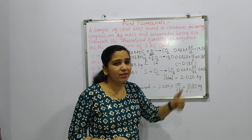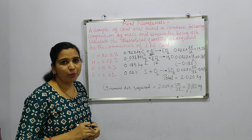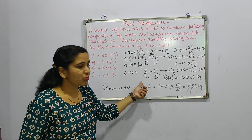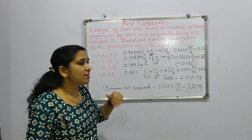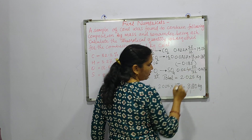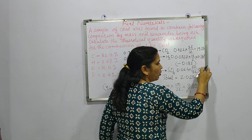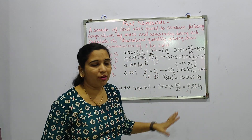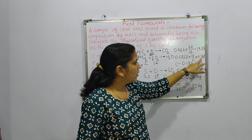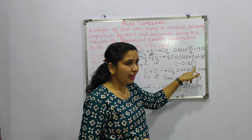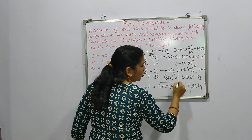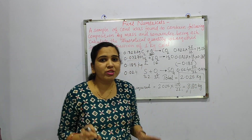Moving to oxygen already present in coal: we subtract 0.187 kg. For sulfur at 2.4 percent, that is 0.024 kg, and oxygen required is 0.024 × 32/32. Combining all terms — 0.859 minus 0.187, minus 0.185, plus 0.024 — the total oxygen required comes to approximately 2.025 kg.